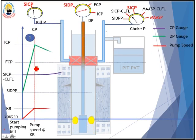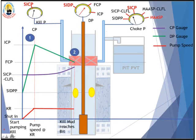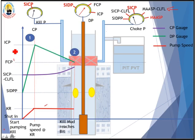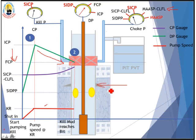Stage two: we continue pumping and transfer attention to the drillpipe pressure gauge, watching that casing pressure does not exceed the maximum allowable — deducting choke line friction loss — while the influx is below the shoe. We keep circulating at kill rate and control the choke to keep drillpipe pressure following the step-down graph from ICP to FCP. Make sure casing pressure gauge stays below maximum allowable, deducting choke line friction loss, while influx is below shoe. When influx is above the shoe, we can ignore the maximum allowable deducting choke line friction loss limit.